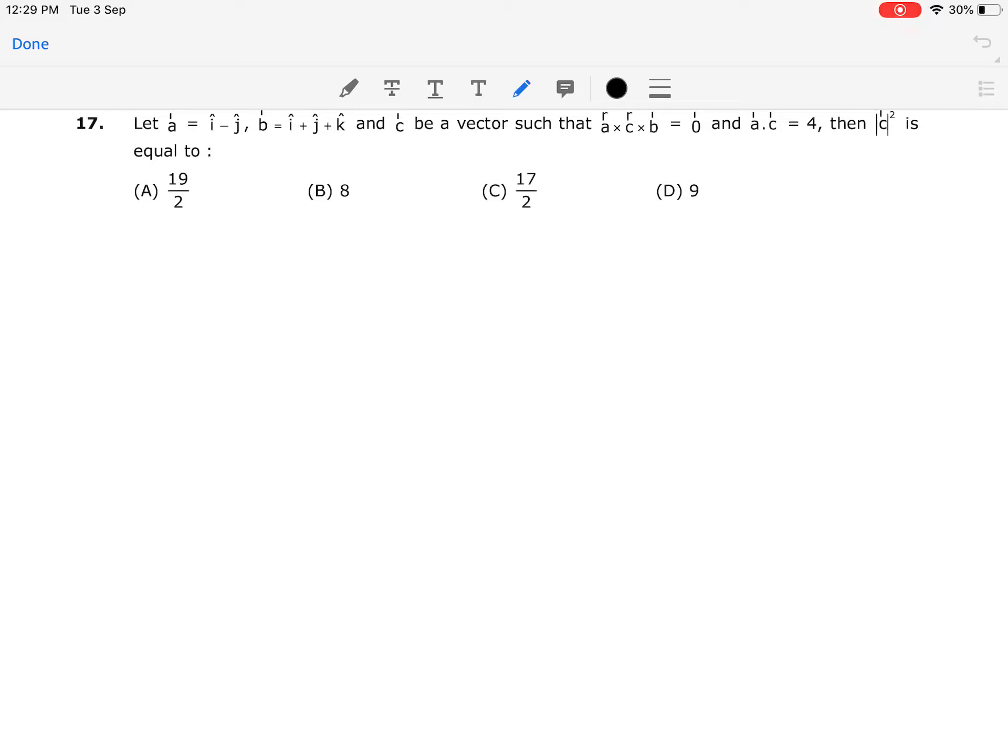Let us talk about question number 17. Here it is written vector a is i cap minus j cap, vector b is written as (1,1,1), meaning i cap plus j cap plus k cap. One relation is given. This relation is wrongly written here; it will be actually a vector cross c vector plus b vector equals 0.